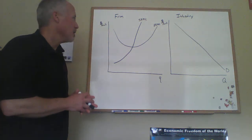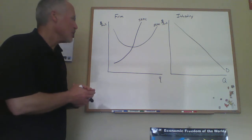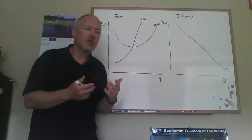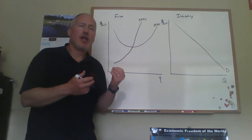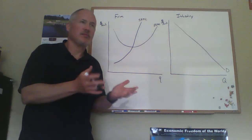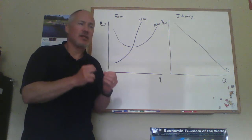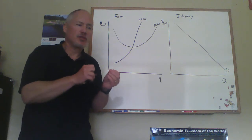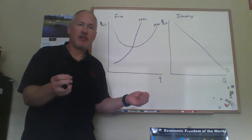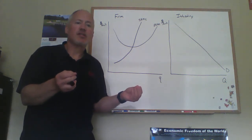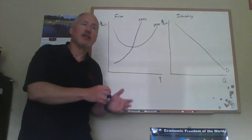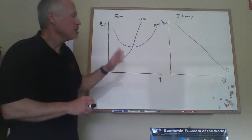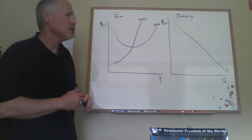In the short run, there's going to be a fixed number of firms in the industry. That follows from the fact that capital is fixed in the short run. If a firm not in the industry would have to build or open a factory, and a firm currently in the industry cannot change their capital in the short run, then it would be inconsistent to say a firm could go from having no capital to having a factory in the short run. So we have to say the number of firms in the industry is fixed.